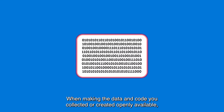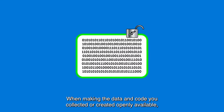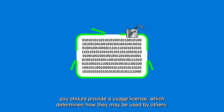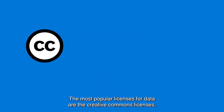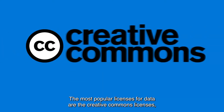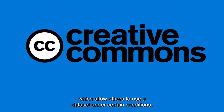When making the data and code you collected or created openly available, you should provide a usage license which determines how they may be used by others. The most popular licenses for data are the Creative Commons licenses, which allow others to use a dataset under certain conditions.